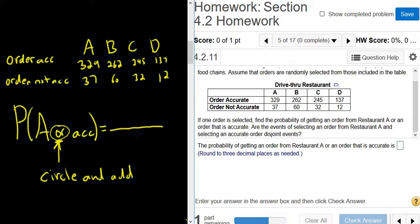So what that means is that all you do is you go to A, and you circle all the As, and then you go to accurate, so you circle all of the accurates. And then you add up all of these numbers, and this goes up top.